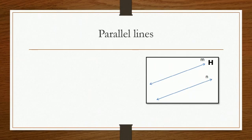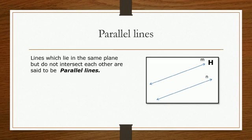Parallel lines. Lines which lie in the same plane but do not intersect each other are said to be parallel to each other. In the figure alongside, lines M and N lie in the plane H and are parallel to each other.